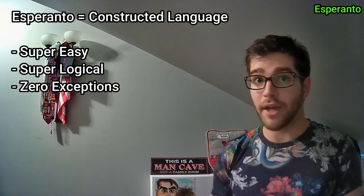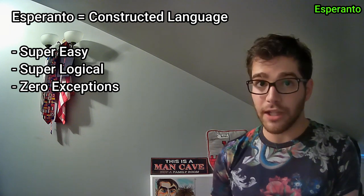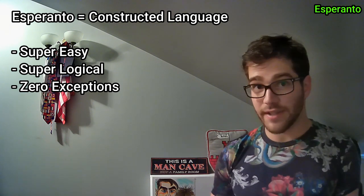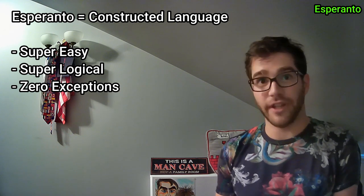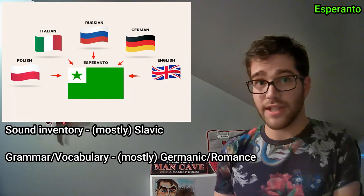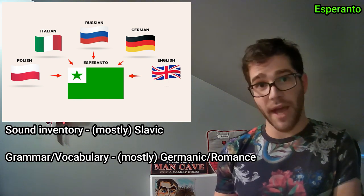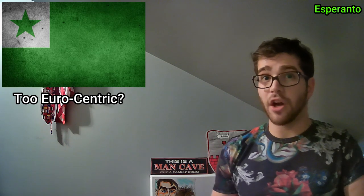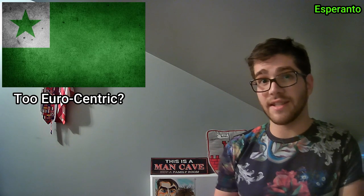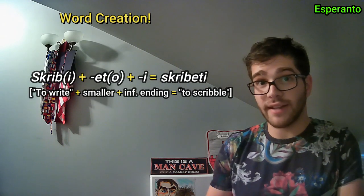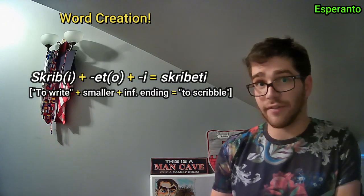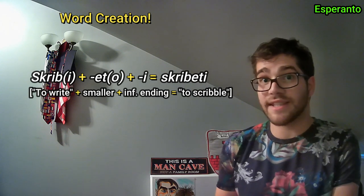One question still remains: what is Esperanto? Well, it is a constructed language with many rules, though it was made to deliberately be super easy and super logical to learn, with zero exceptions, unlike literally every natural language. The sound inventory is mostly based off of Slavic languages, while the vocabulary is mostly based off of Romance and Germanic languages — which might be one of the reasons why it never really caught on globally, because it's seen as very Eurocentric. It's made in a way that you can create a ton of new Esperanto words by gluing words together, kind of like German, thanks to its extensive system of prefixes and suffixes. Let's try reading some.